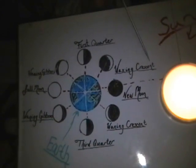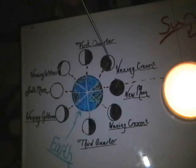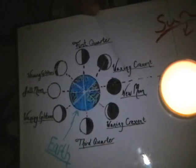This is a waxing crescent. This occurs when the sun, the earth, and the moon create an acute angle.